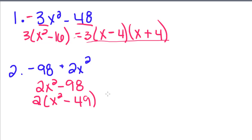And now they are both perfect squares. The square root of x squared is x minus the square root of 49, which is 7, and then x plus 7.